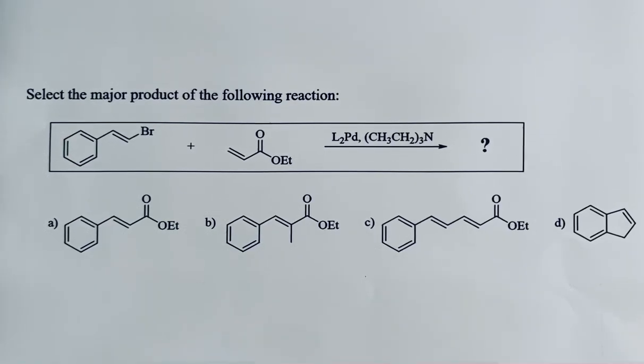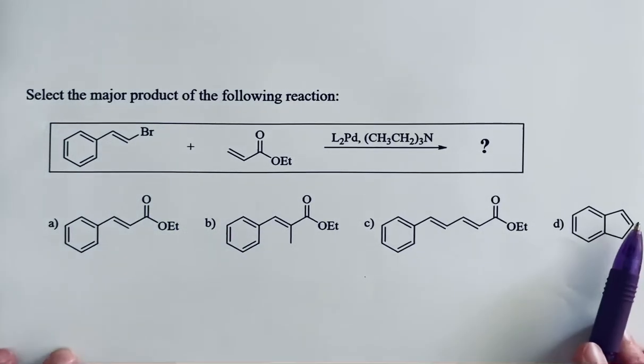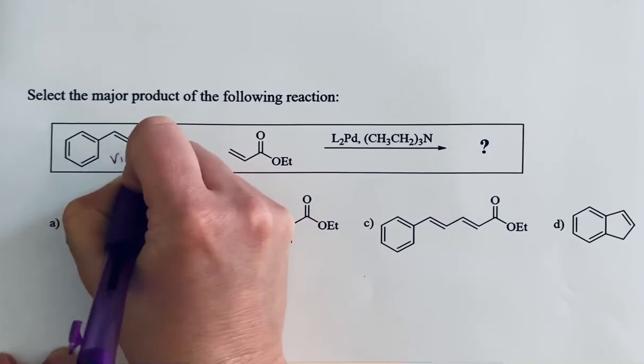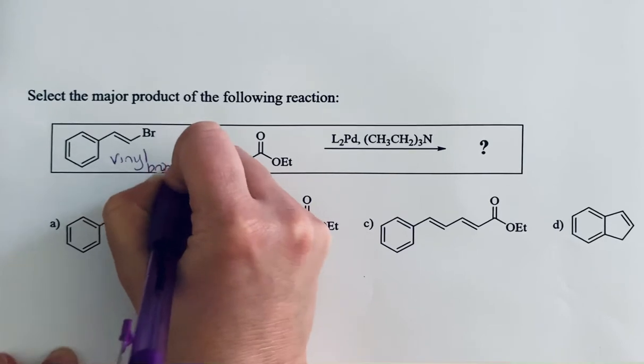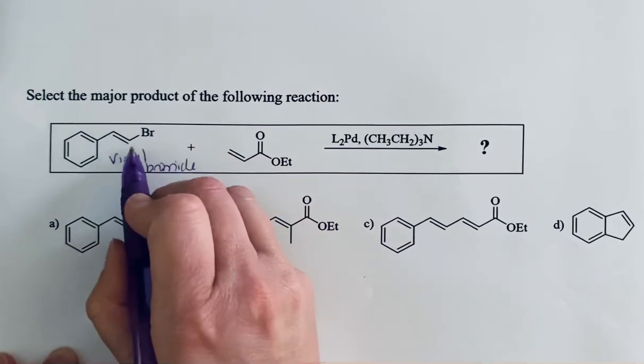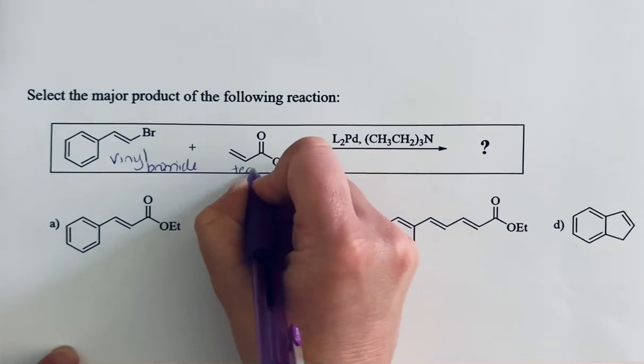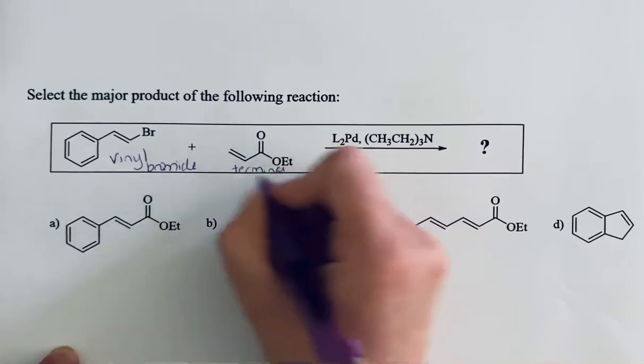Select the major product of the following reaction. If we take a look at our reaction scheme we can see that we have a vinyl bromide. Our bromine is directly attached to the vinylic or sp2 carbon atom of that alkene and we're reacting this also with a terminal alkene.